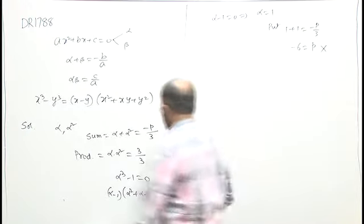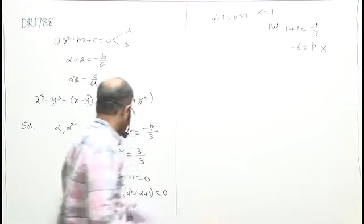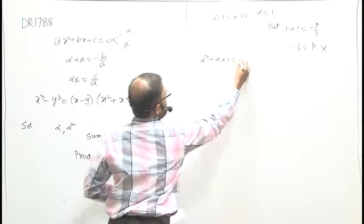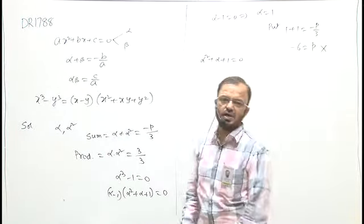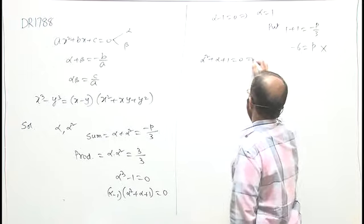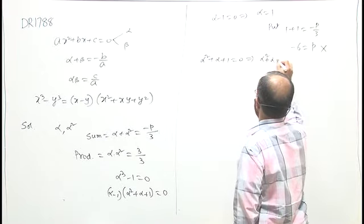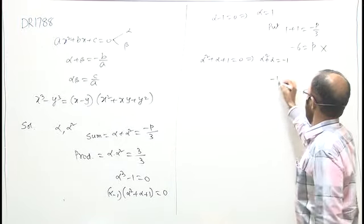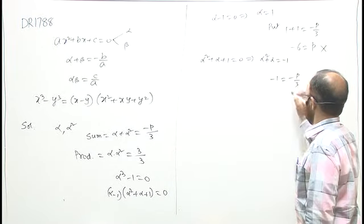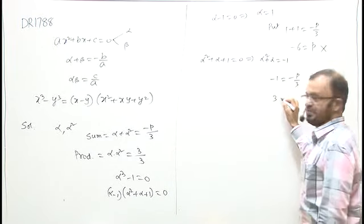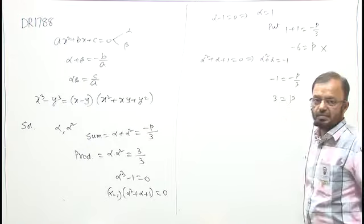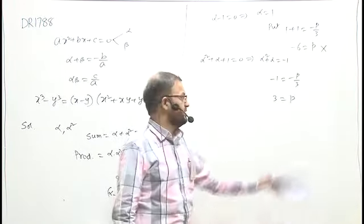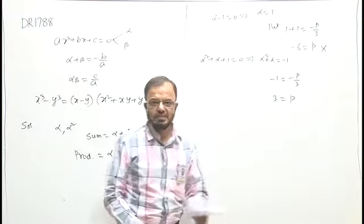P की और एक value निकालने के लिए, हम second factor ले रहे हैं: alpha square plus alpha plus 1 equal to 0. यहाँ से alpha square plus alpha की value मिल रही है minus 1. I will put this in this equation, तो मिल रहा है: minus 1 equal to minus P by 3. Cross multiply करेंगे, तो P is equal to 3 मिल रही है. That is a positive value, so this value will be accepted as the answer.